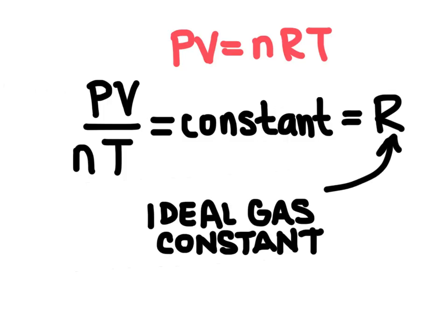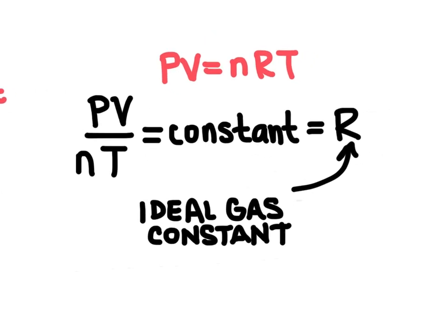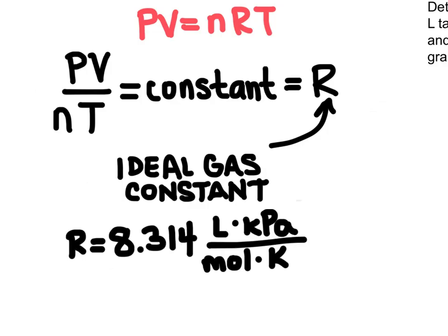Now this works for any gas, no matter the identity of the gas. It all works the same. We get the same value for R, and the number we end up with is 8.314, and the units of this value are liters times kilopascals over moles times Kelvins. These are literally the units for this number.